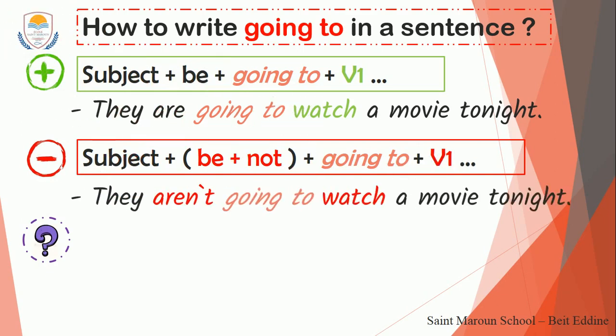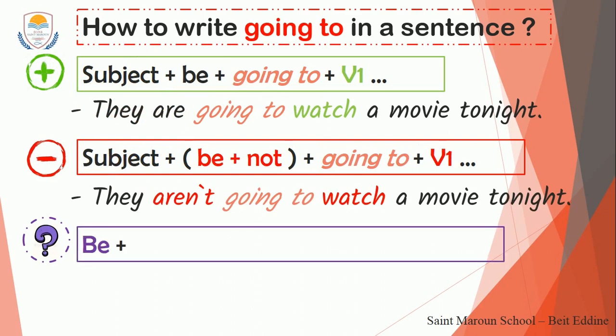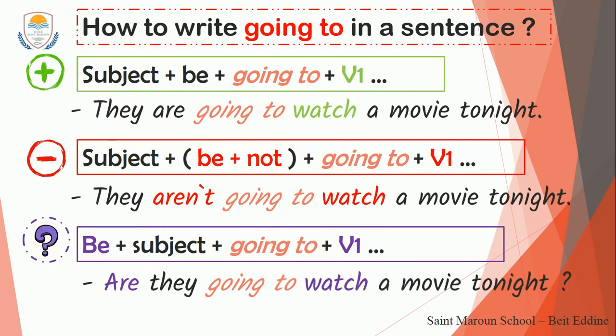For example: 'They aren't going to watch a movie tonight.' And the question form is: I start with the verb to be, then the subject, then 'going to', then verb one. For example: 'Are they going to watch a movie tonight?' with a question mark. You have to notice that I use verb one after 'going to' — I don't change the verb, I use the base form.